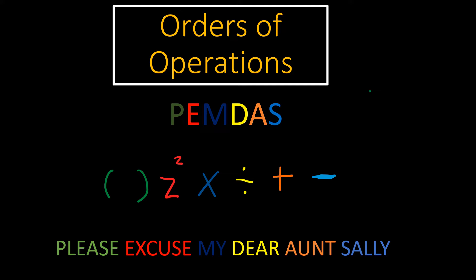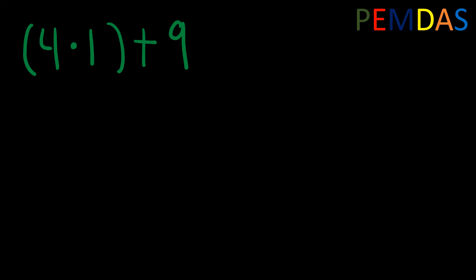Let's work through some problems. Here we have 4 times (1 plus 9). According to PEMDAS we have to start within the parentheses. So first we're going to compute 1 plus 9, and that's just 10. Wait — actually, we compute 4 times 1, and that's just 4.